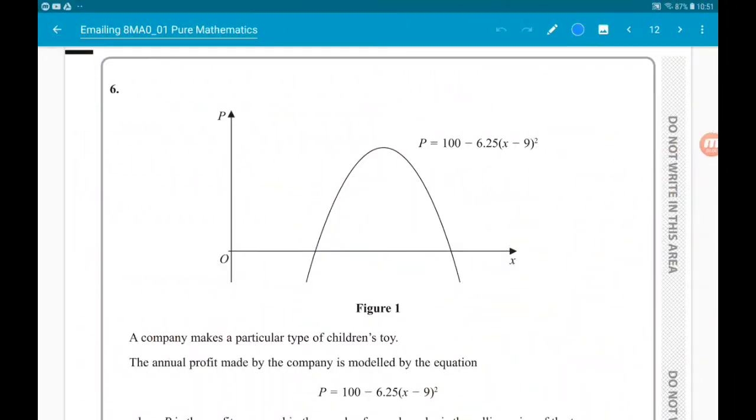Okay, question six. We've got this lovely graph with p upside and x along the bottom. And the equation of the graph is 100 minus 6.25 times x minus 9 squared.